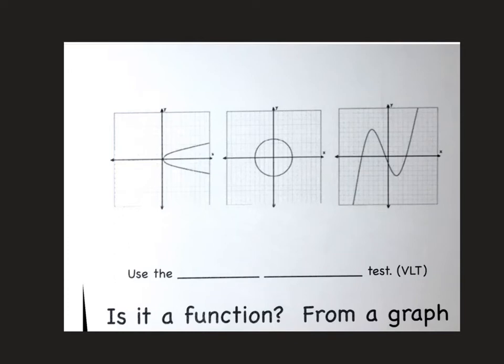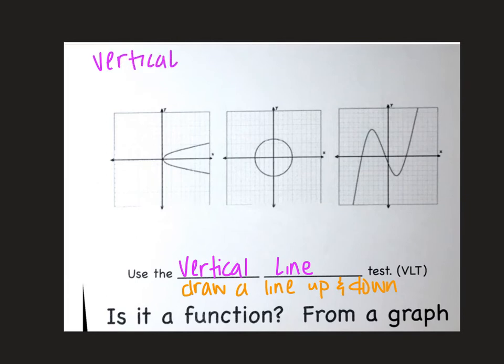The last tab on the foldable wants to look at a graph. This one has two blanks. The sentence at the bottom says use the blank blank test, VL test. What you want to put here is vertical line. We are going to do a vertical line test. If I draw a line anywhere up and down on the graph and it touches more than one time, it's not a function. So vertical line means you need to draw a line up and down. And if it touches twice, it's not a function. So it can only touch once. Vertical line can only touch once.